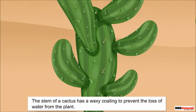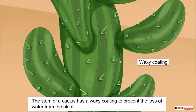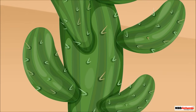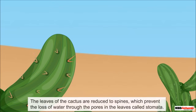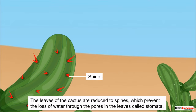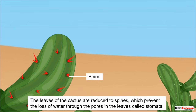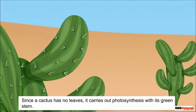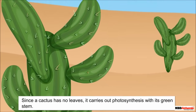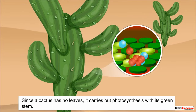In addition, the stems also have a waxy coating which prevents the loss of water from them. You can also notice that a cactus has no leaves. Actually, the leaves in cactus are reduced to spines. This is an adaptation of this plant to prevent the loss of water that occurs through the pores in the leaves called stomata.